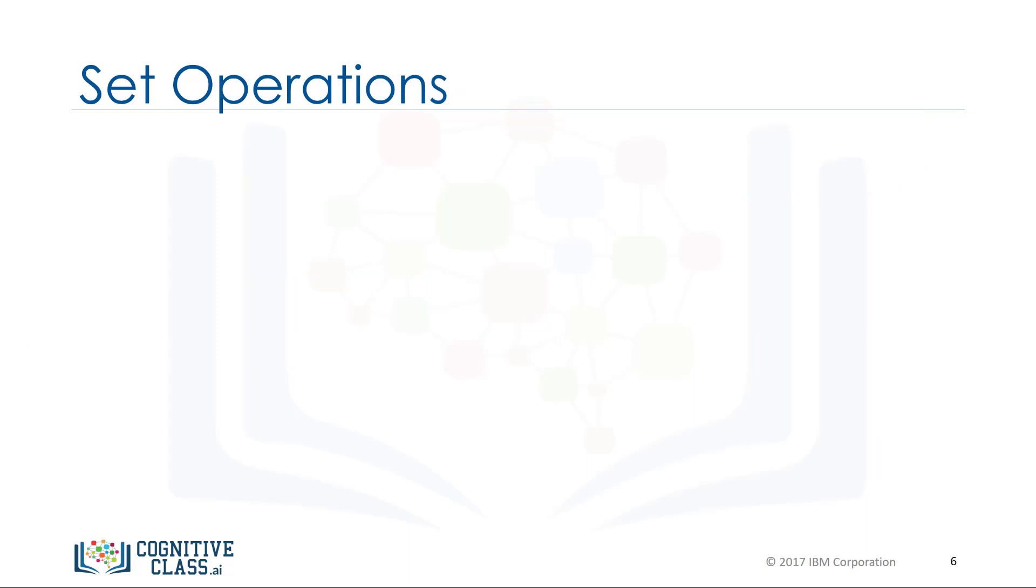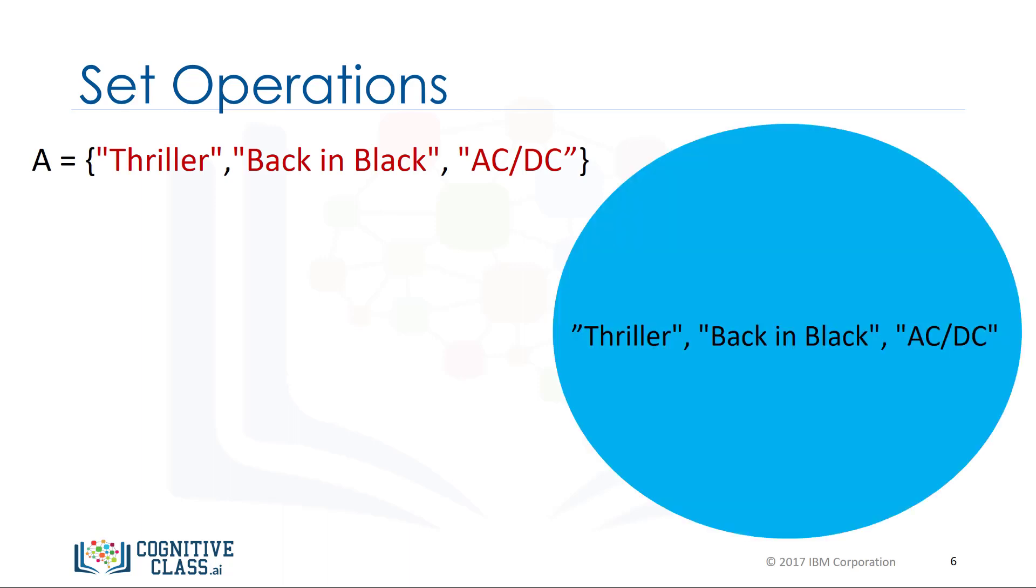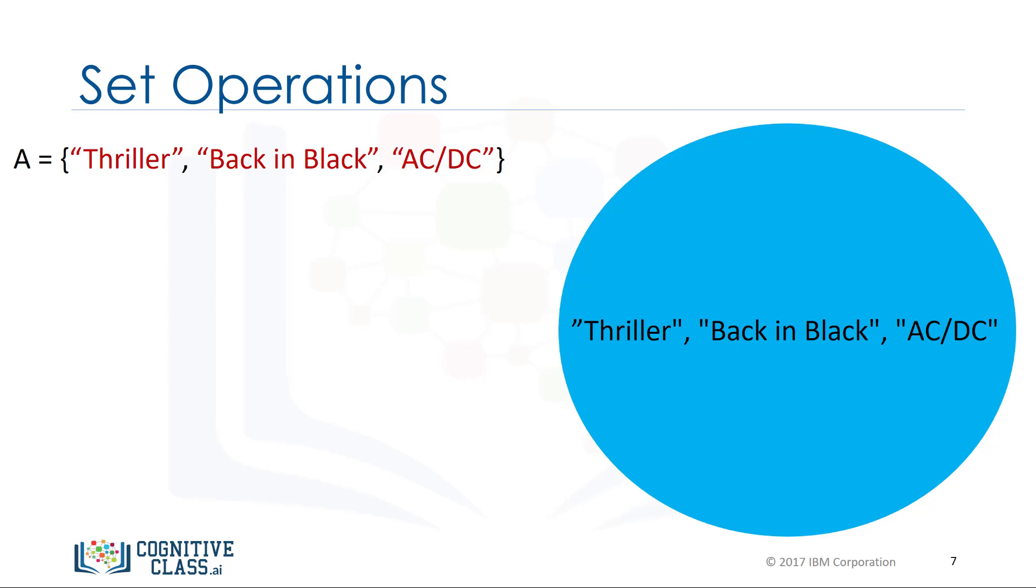Let's go over set operations. These can be used to change the set. Consider the set A. Let's represent this set with a circle. If you are familiar with sets, this can be part of a Venn diagram. A Venn diagram is a tool that uses shapes usually to represent sets.